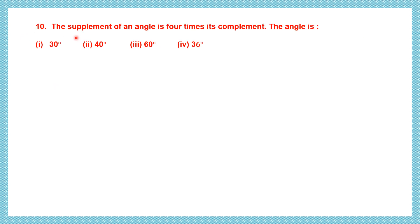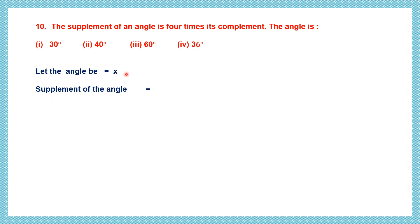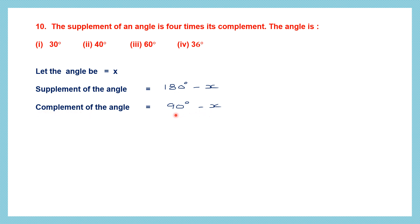Question 10. The supplement of an angle is 4 times its complement. We know what supplementary and complementary angles are, and we need to find the angle. Let the angle be X. The supplement is 180 degrees minus X. The complement of the same angle is 90 degrees minus X. To find supplementary angles, subtract from 180; to find complementary angles, subtract from 90.